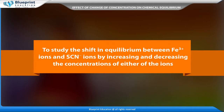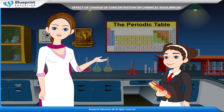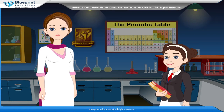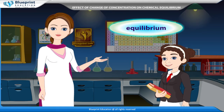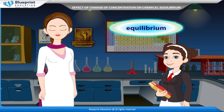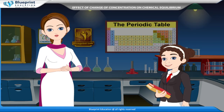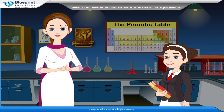Our aim is to study the shift in equilibrium between Fe³⁺ ions and SCN⁻ ions by increasing and decreasing the concentrations of either of the ions. Le Chatelier's principle states that when a change is made to a system that is already in equilibrium, the system reacts in such a way as to return to equilibrium.